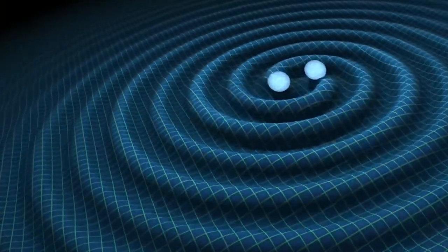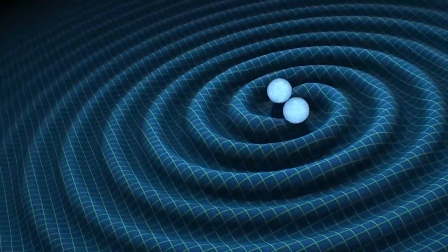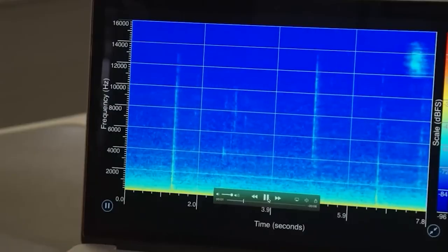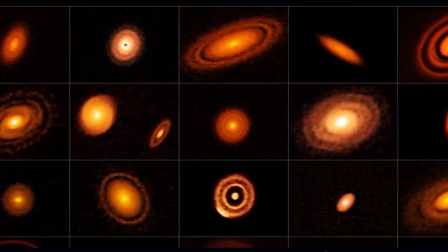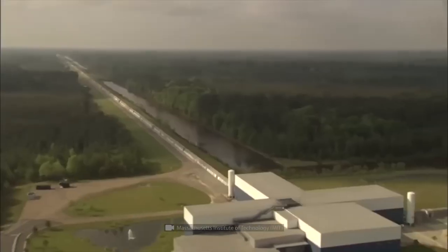When two black holes collide, gravitational waves are produced that ripple through space-time as a result of the flash that is sent forth. Highly sensitive astronomical devices, such as those at the Laser Interferometer Gravitational Wave Observatory, or LIGO, can detect these unusual waves.